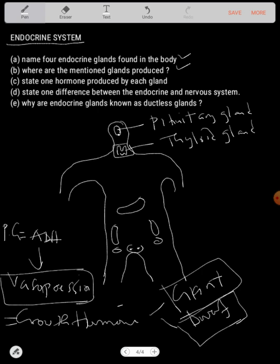Giantism is a condition where an individual is abnormally tall and huge. We also have acromegaly, which is also caused by too much growth hormone — it involves the enlargement of the bones. Then there is dwarfism, where someone grows into a dwarf due to very little growth hormone.